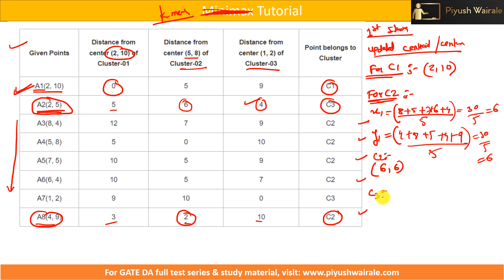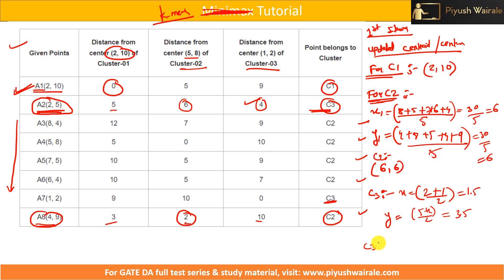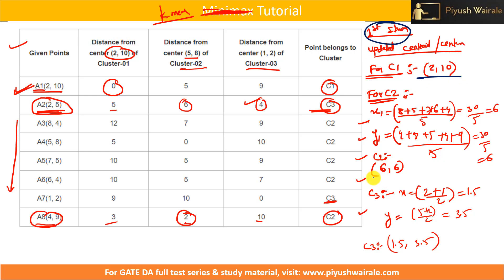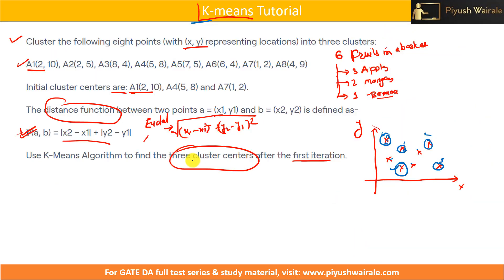Similarly, for C3, what are the data points? Only A2 and A7 — two data points. The X coordinate will be (2+1)/2 = 1.5, and the Y coordinate will be (5+2)/2 = 3.5. So C3 will be 1.5, 3.5. This is the updated cluster after the first iteration: C1 is 2,10; C2 is 6,6; and C3 is 1.5,3.5.